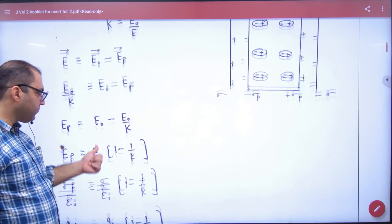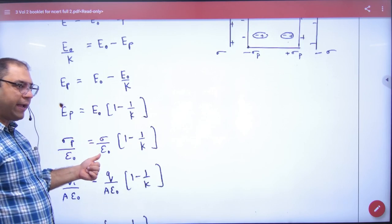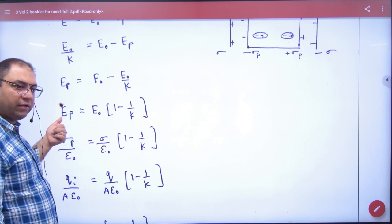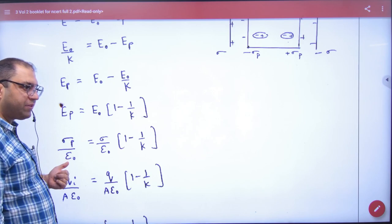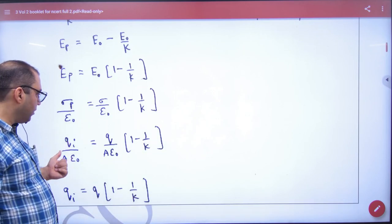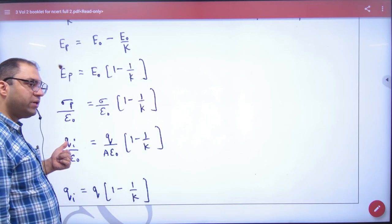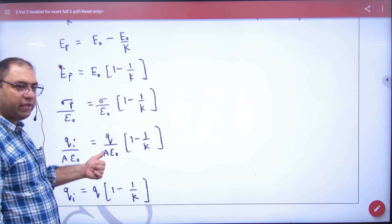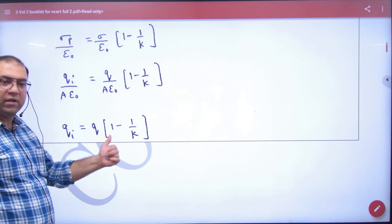E₀ is σ by ε₀. Because this is plates of capacitor's E₀. Eₚ dielectric is σₚ by ε₀. This cancels. σₚ is charge on dielectric by area. σ is charge on plates of capacitor by area. So solving this, you get this answer.